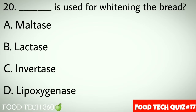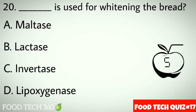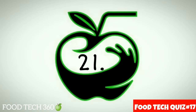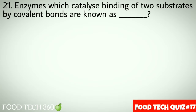Question number 20: Dash is used for whitening the bread. Options: A. Maltase, B. Lactase, C. Invertase, D. Lipoxygenase. Correct answer: D. Lipoxygenase.